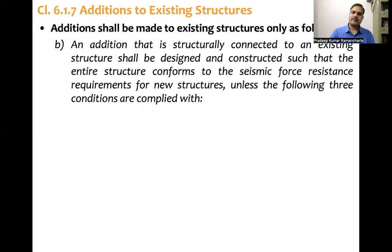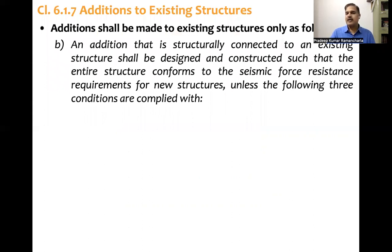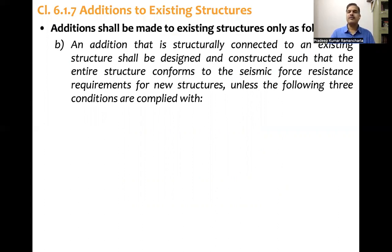The second condition is an addition that is structurally connected — unlike the earlier independent case — to an existing structure shall be designed and constructed such that the entire structure conforms to the seismic force resistance requirements for new structures, unless the following three conditions are complied with.